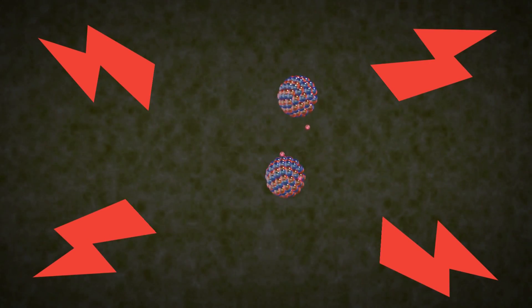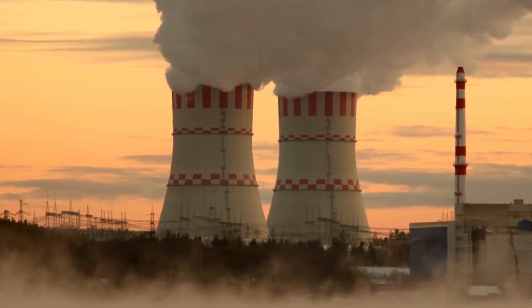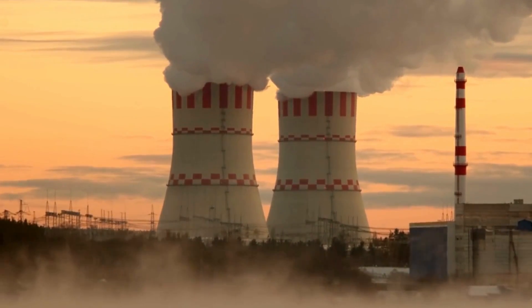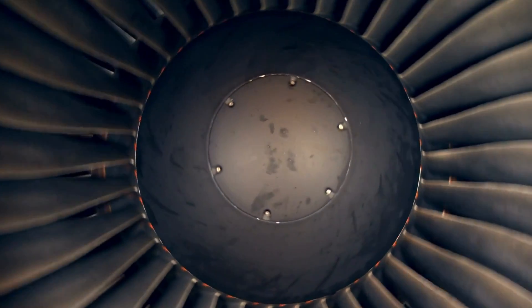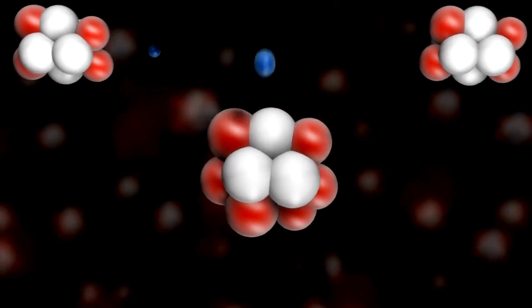The heat produced by fission processes in nuclear power plants is utilized to create steam, which powers turbines to produce electricity. Nuclear weapons, on the other hand, use uncontrolled fission processes to produce a massive explosion by releasing a lot of energy.